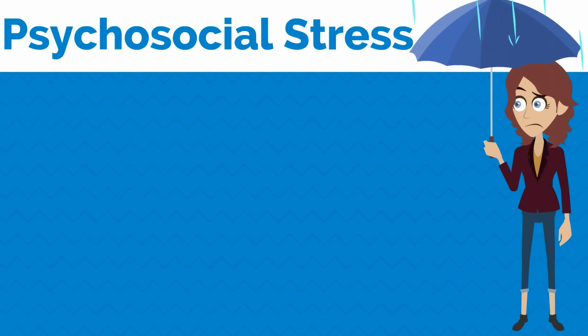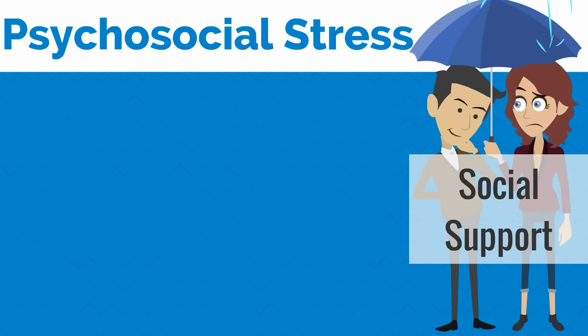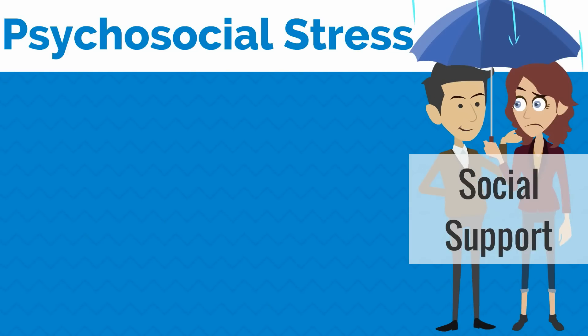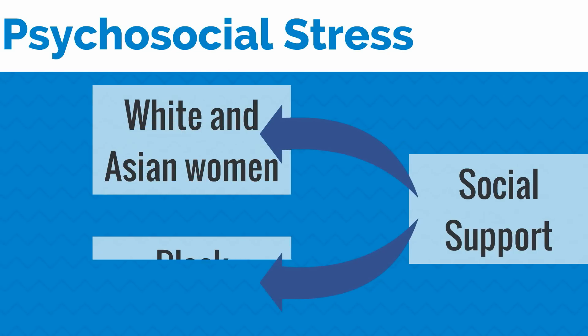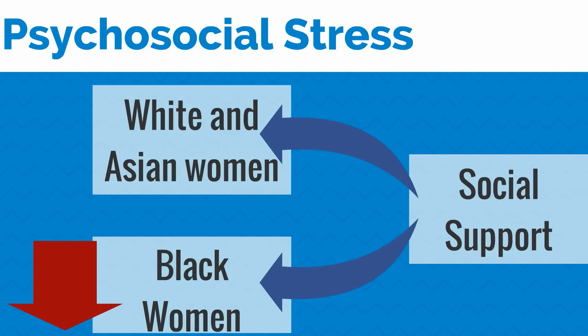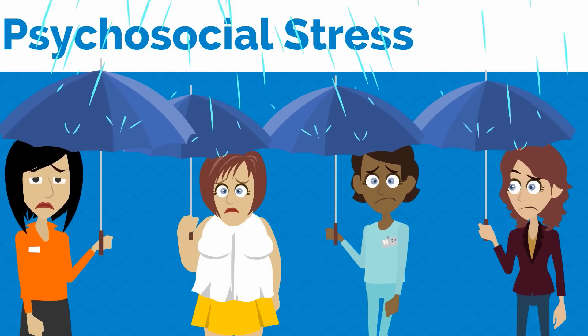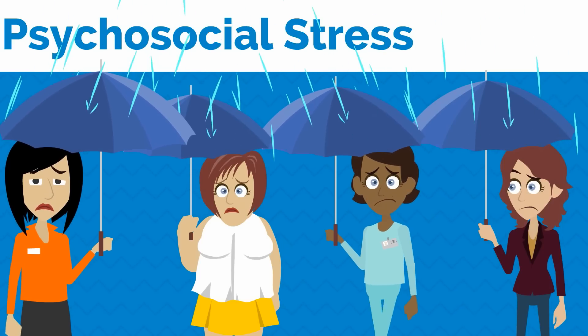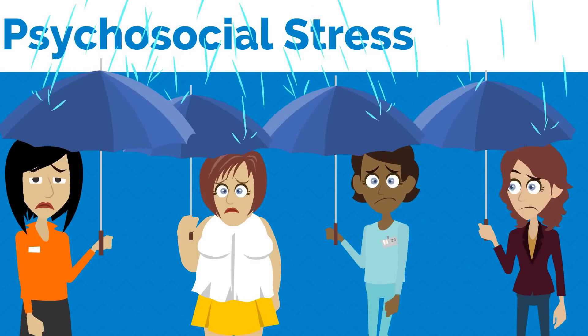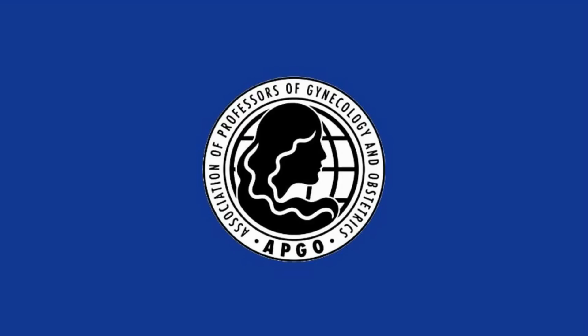Let's conclude by discussing psychosocial stress associated with infertility. The amount of social support a patient receives can have significant effects on stress levels. Compared to white and Asian women, black women were less likely to report encouragement for treatment from their partners and family members. It is important to recognize that this psychological stress exists, determine the patient's support network, and help patients find resources to help them through this process. This concludes the APCO video on infertility, having described evaluation and initial management of an infertile couple and the ethical and psychosocial issues associated with this common condition.